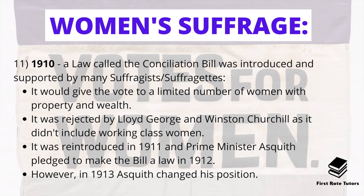The Conciliation Bill was reintroduced in 1911, and Prime Minister Asquith pledged to make it law in 1912. However, in 1913 he changed his position and this law never became a bill.